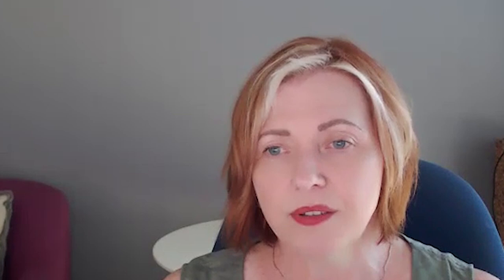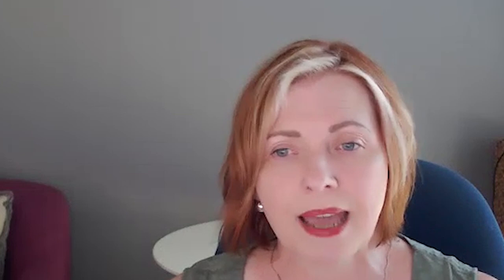The salaried manager was born between 1800 and 1920, where the number of professional managers in the United States grew from 161,000 to more than 1 million. Similar growth occurred in other Western nations, such as Australia, the UK and New Zealand. These professional managers began developing and testing solutions to the mounting challenges of organising, coordinating and controlling large numbers of people and thus increasing worker productivity.